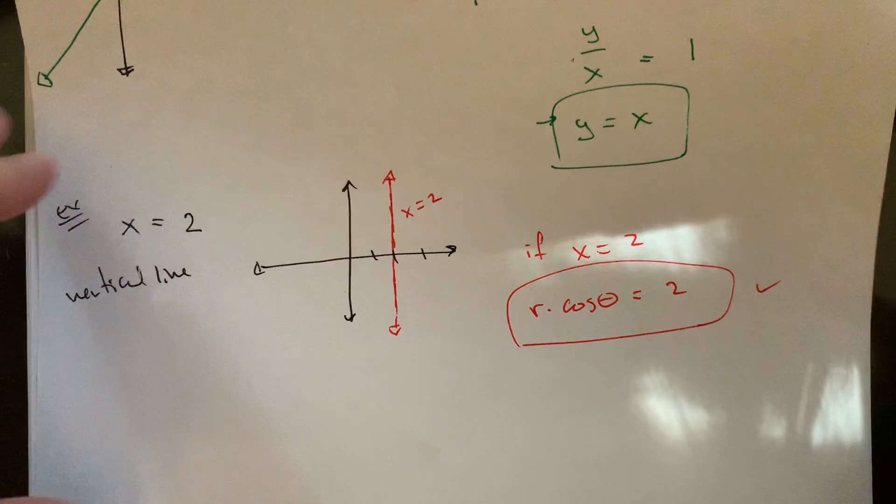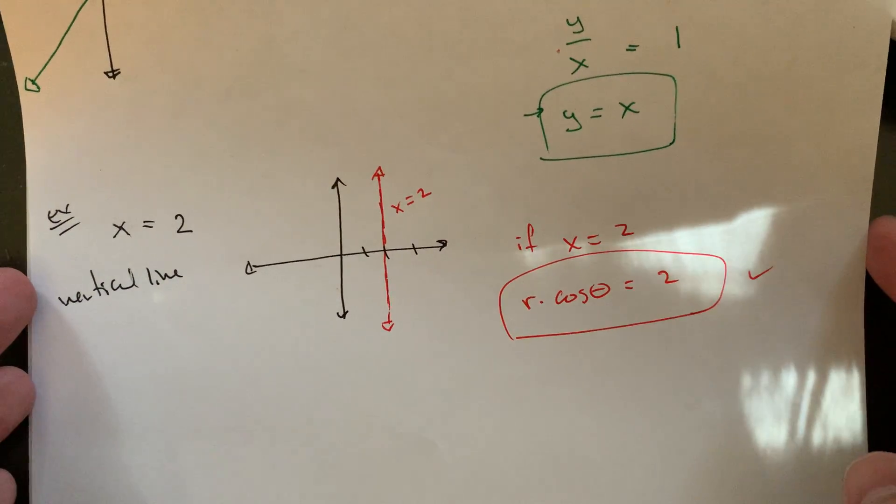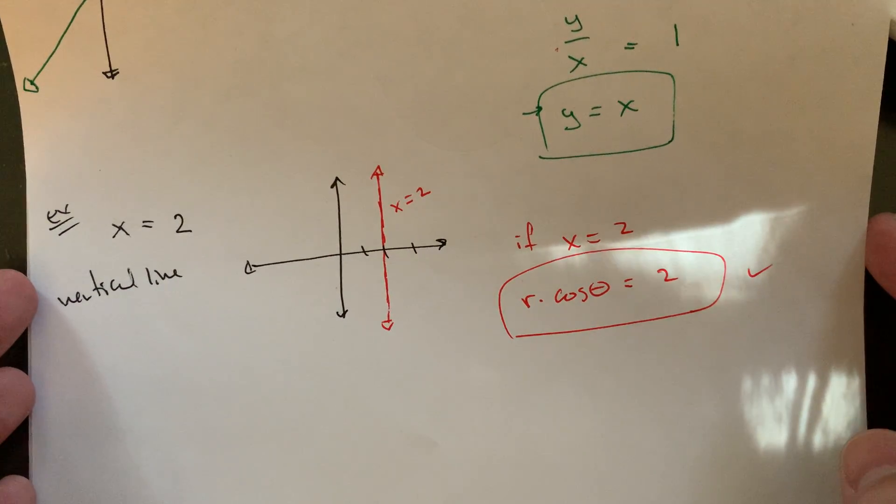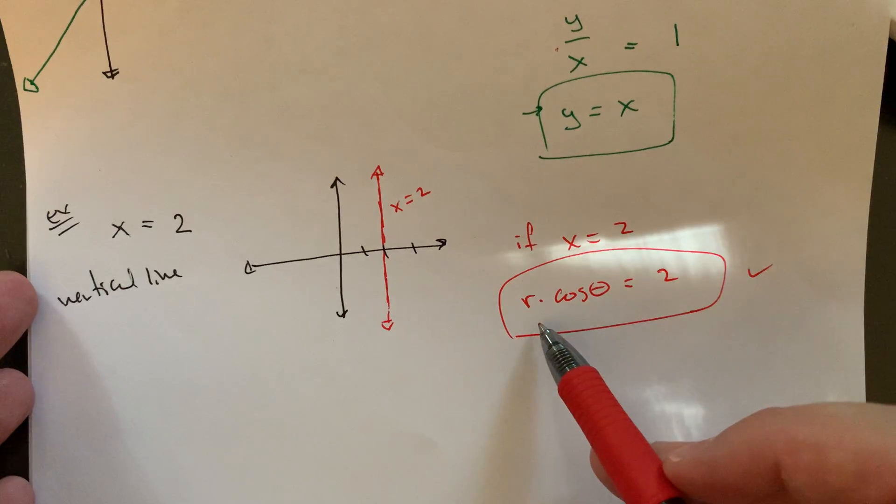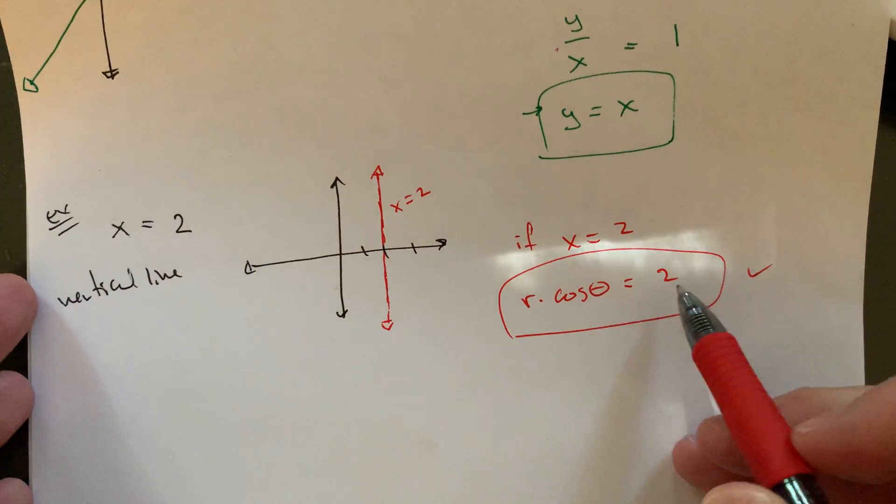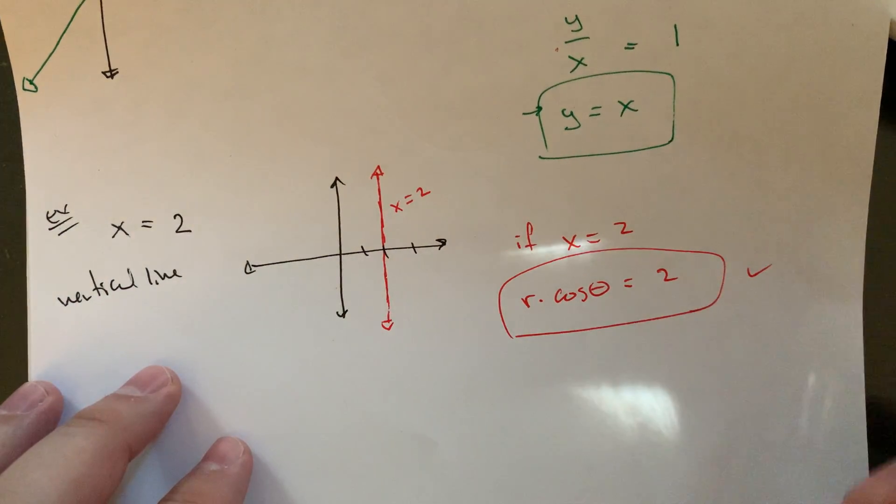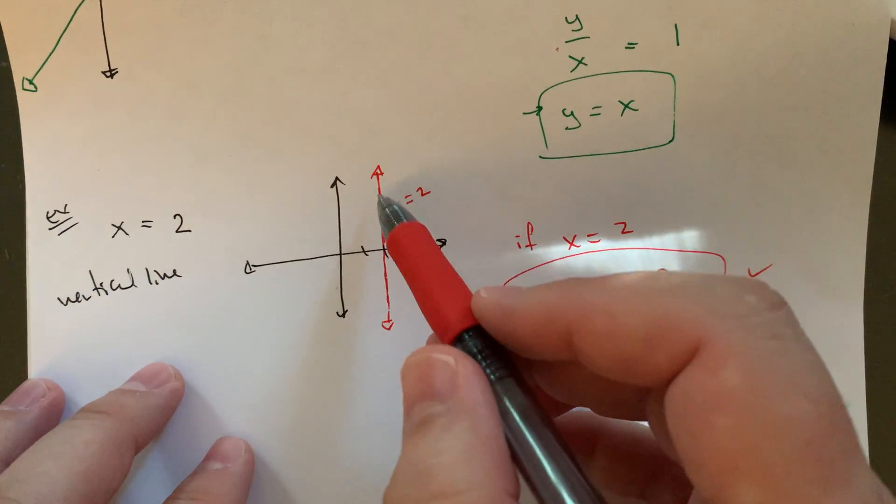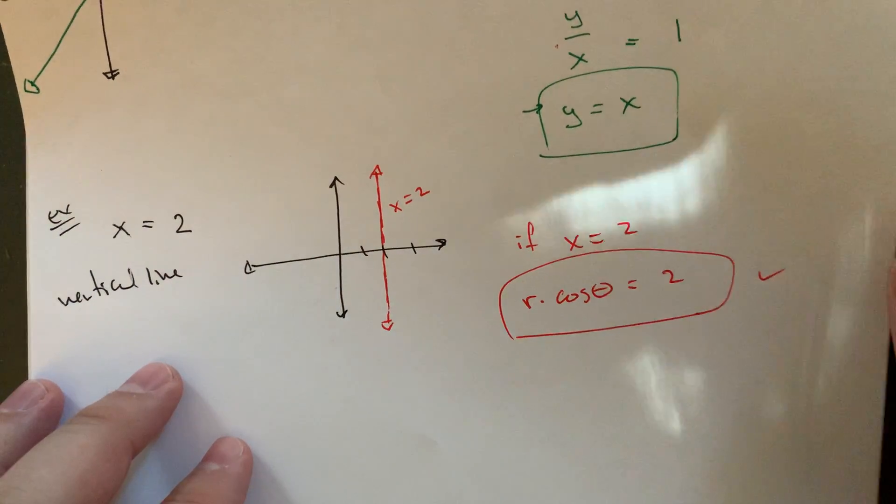And that would be kind of a polar version of that equation. It would kind of give you in polar coordinates, the radius times cosine theta equals two, to sort of have that relationship kind of somewhat unexpectedly gives you this vertical line.